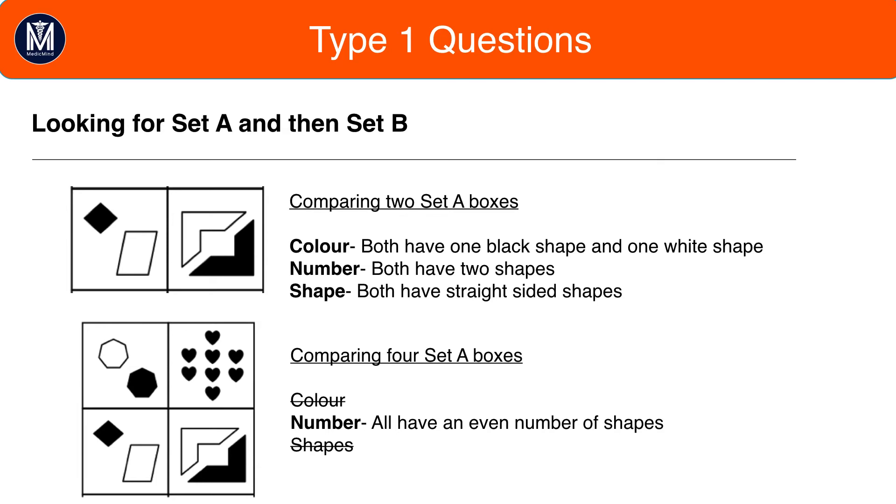And now, we've adjusted it to having an even number of shapes. Great, we found the pattern for Set A and it's very likely that the pattern is inverse odd number of shapes for Set B.